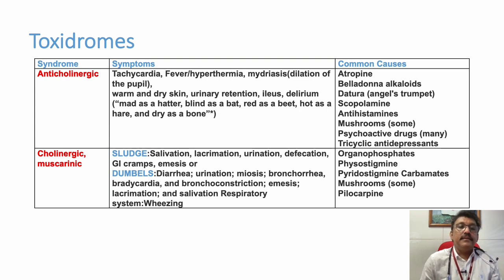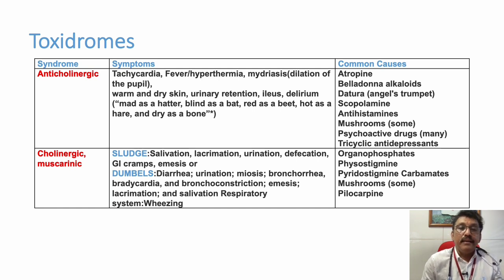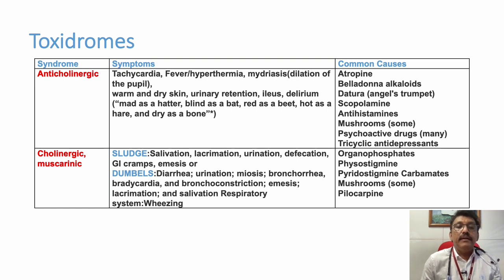In anticholinergic toxidrome, patients can have increased heart rate, tachycardia, high-grade fever, dilated pupils — very important, just as seen when giving atropine — warm and dry skin, urinary retention (which is why we place a catheter before starting atropine treatment in organophosphate poisoning), paralytic ileus, and delirium. All findings seen when giving atropine are the findings of anticholinergic syndrome.